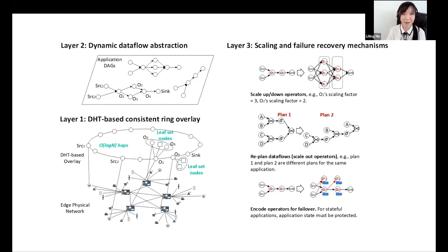Here is the DART system overview. DART consists of three layers. The first layer is the DHT-based consistent ring overlay. All edge nodes such as routers, gateways, and powerful sensors are self-organized into a DHT-based overlay. Each node is assigned a unique node ID in a large circular node ID space. Node ID is used for routing the stream data.